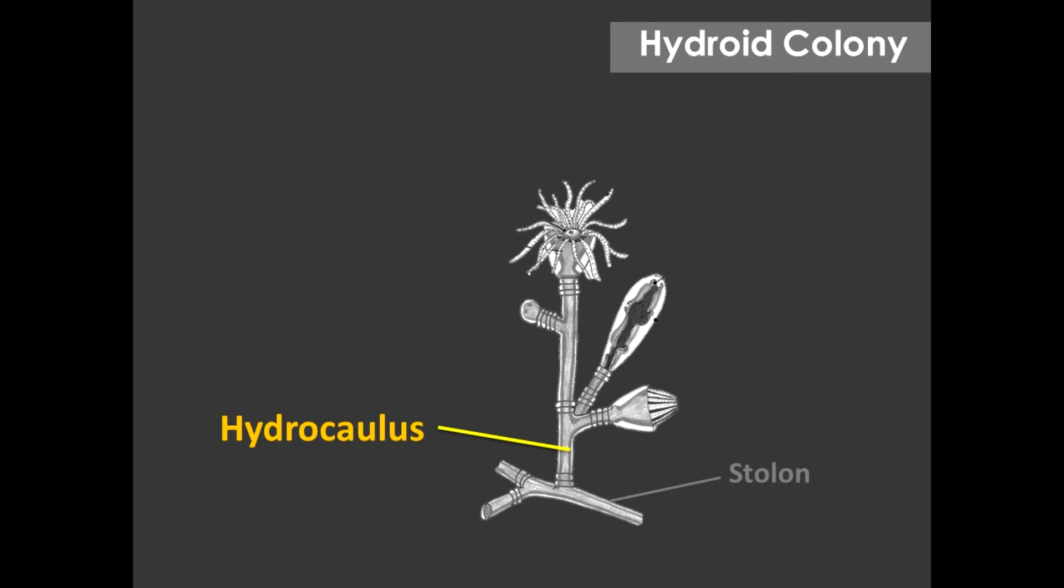The first type of polyp is called gastrozooids or hydranths, which are the feeding polyps. They have a mouth surrounded by stinging tentacles containing nematocysts and are responsible for capturing and consuming prey.